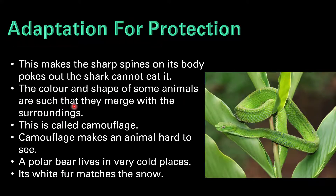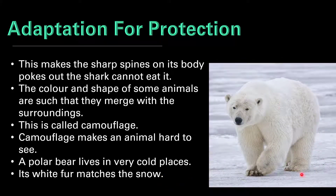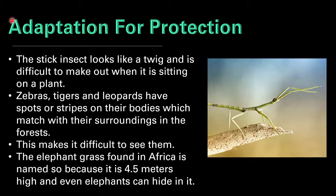The color and shape of some animals are such that they merge with their surroundings. For example, there is a snake on a plant which has green color, making it difficult to identify the snake on the plant. This is called camouflage — camouflage makes an animal hard to see. A polar bear lives in very cold places; its white fur matches with the snow, as we can see in this image. A stick insect looks like a twig and is difficult to spot when sitting on a plant — its color is completely similar to the branch of a tree, making it hard to tell whether it is part of the branch or an insect.